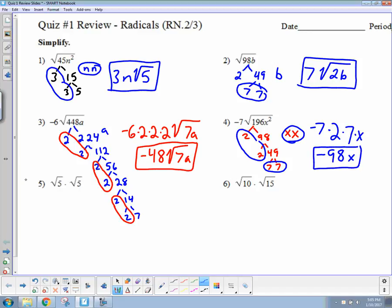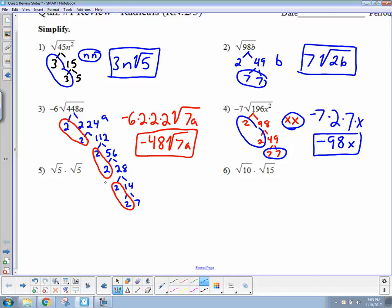Number 5. I'll leave this here, but we can do it right underneath it. Multiply what's inside the house. 5 times 5 is 25. But hey, what's the square root of 25? 5. Done.